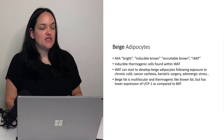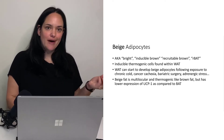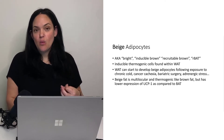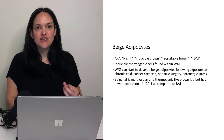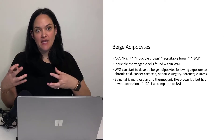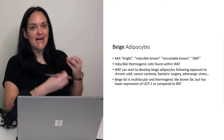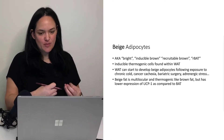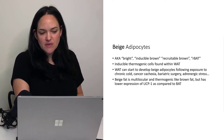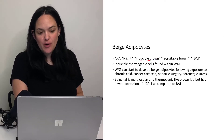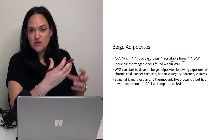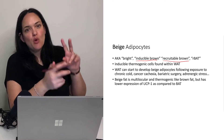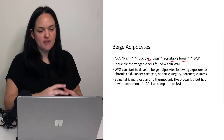Beige adipocytes are pretty much like brown adipocytes — they're more thermogenically active than white adipocytes. However, beige adipocytes do not develop from the same precursors as brown adipocytes. They develop actually from white adipocytes, which is why they're sometimes referred to as inducible brown or recruitable brown, because they don't start as brown. They start as white and then develop into a more brown-like appearance, but they're still different than brown adipocytes.